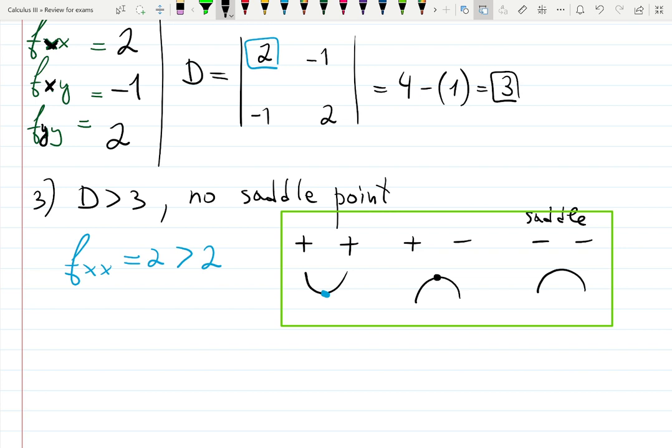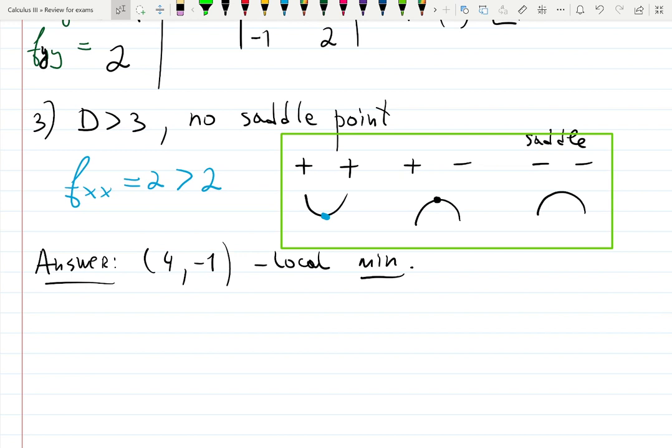So we, in this case, are going to conclude the answer. The point, which we already know, what is that point? 4 and minus 1. (4, -1) is my local minimum. Now sometimes we ask you to actually find the height of that local minimum. Then you need to plug into the original function.